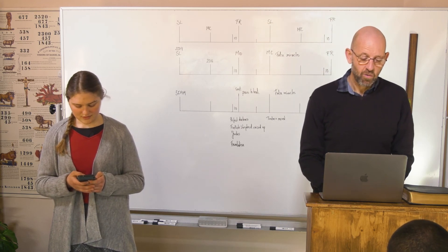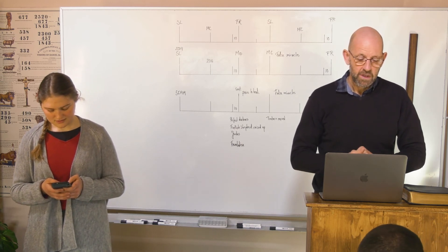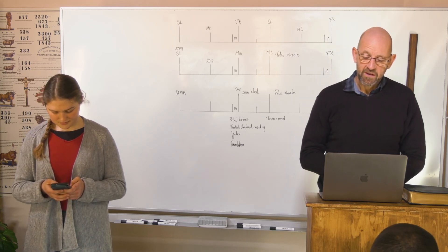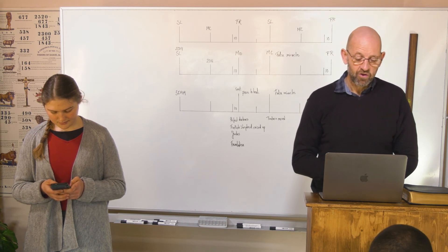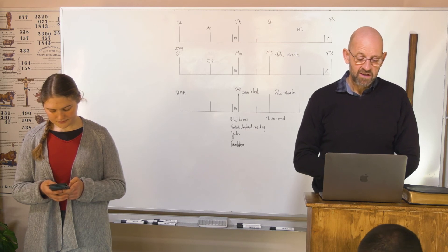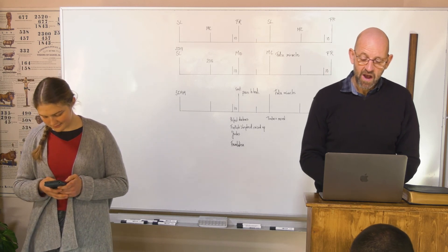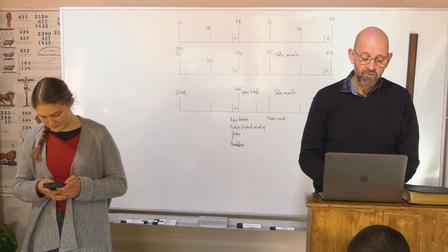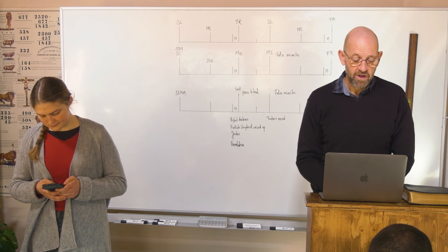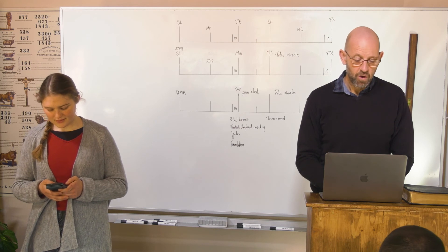2 Kings 1:9-10: The king sent a captain of fifty. And Elijah answered and said, If I be a man of God, then let fire come down from heaven and consume thee and thy fifty. And there came down fire from heaven and consumed him and his fifty.